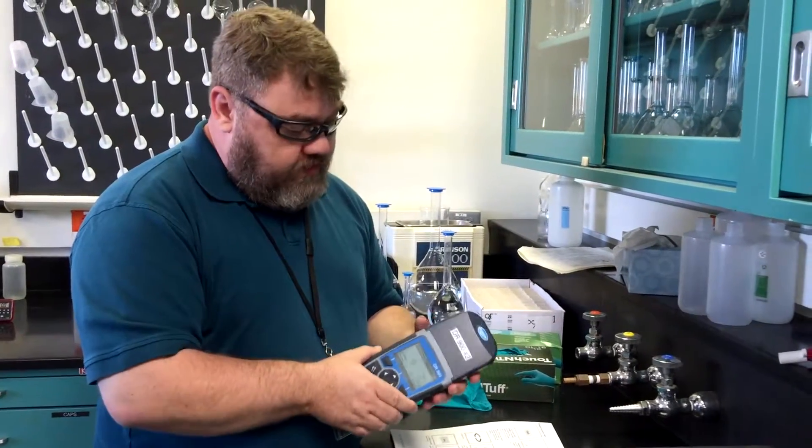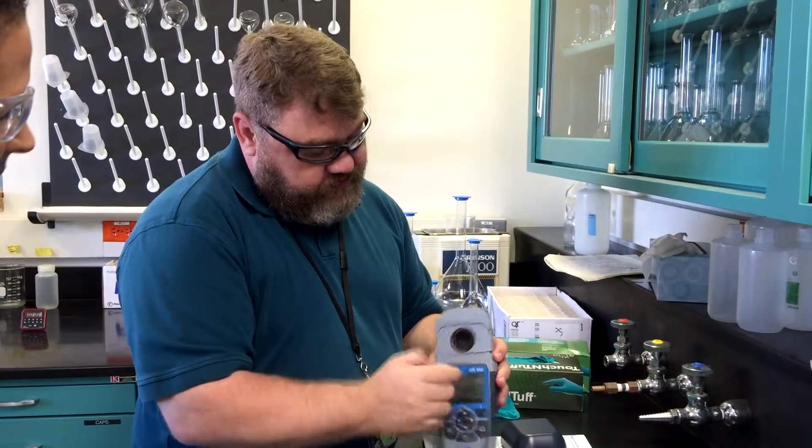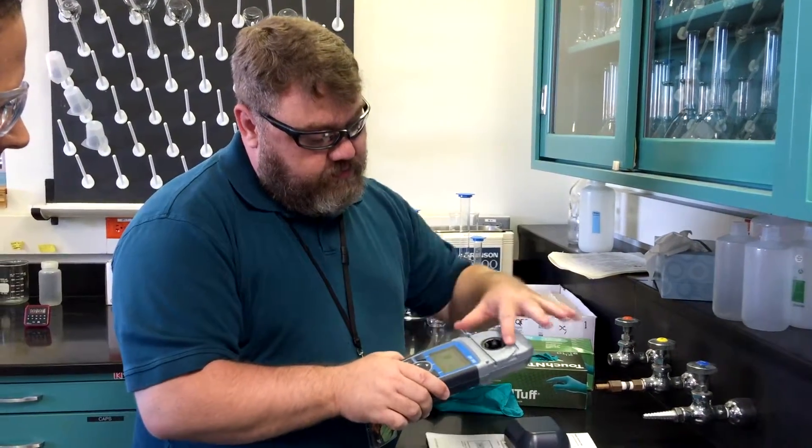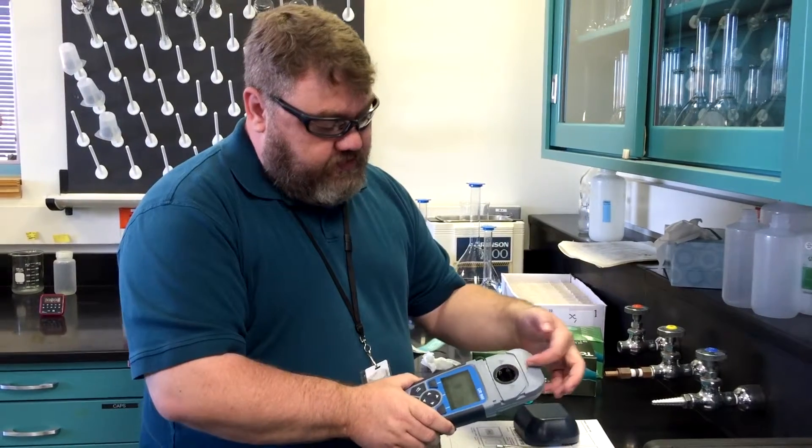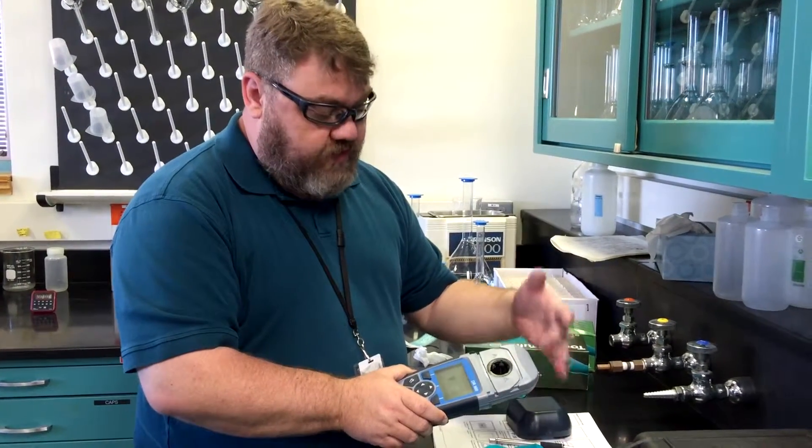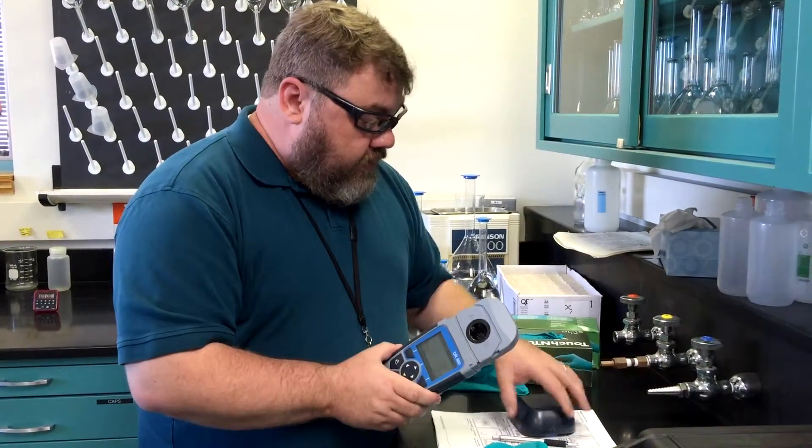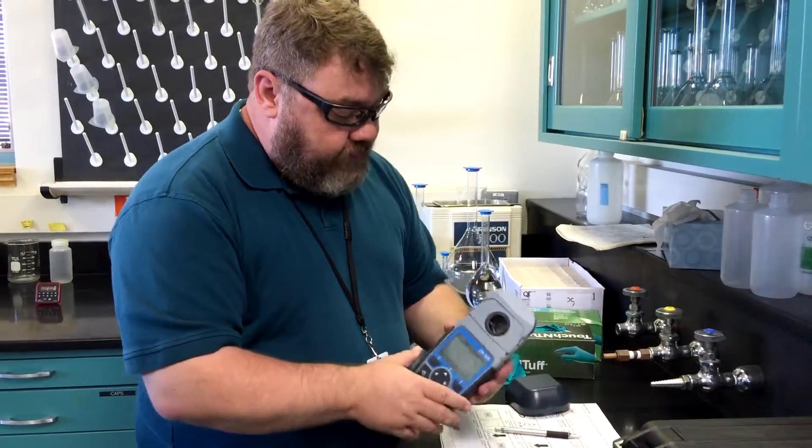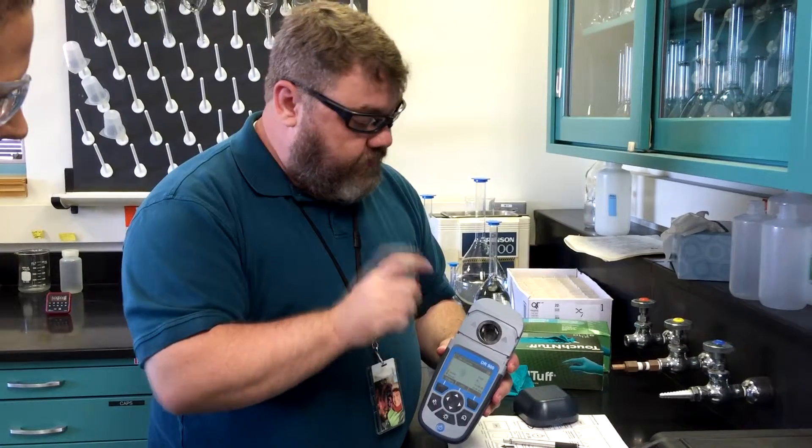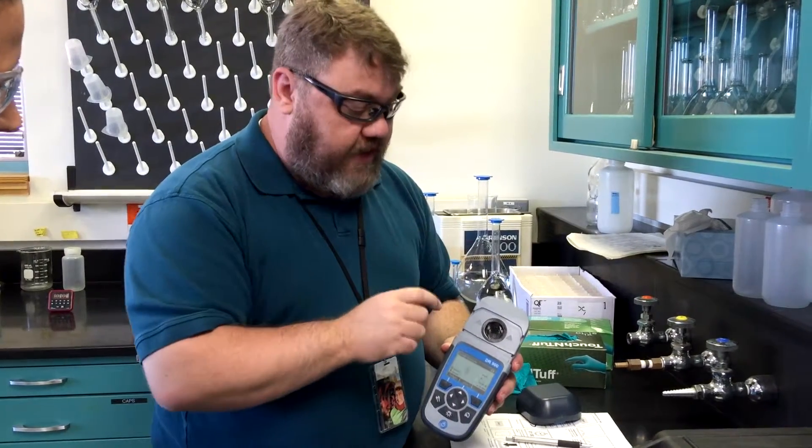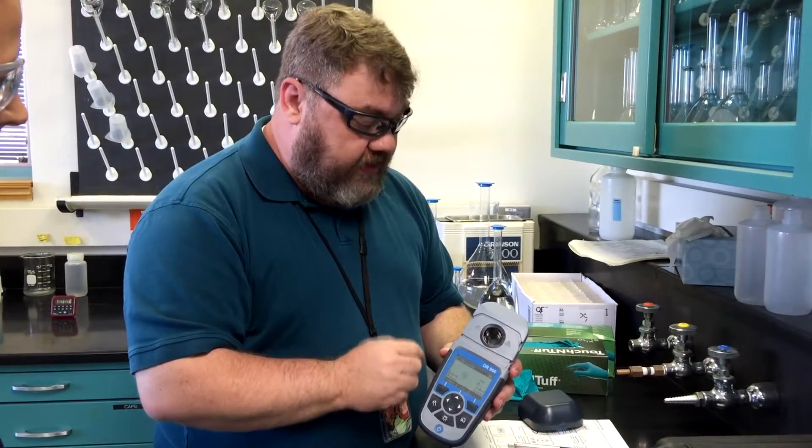The way this works is you put your sample in there, you have a light source that goes through the sample and a detector on the other side. When you run the light through the sample, the amount of signal attenuation is converted or calculated into a concentration. In order to do this properly, we're going to use a blank to set up the baseline.